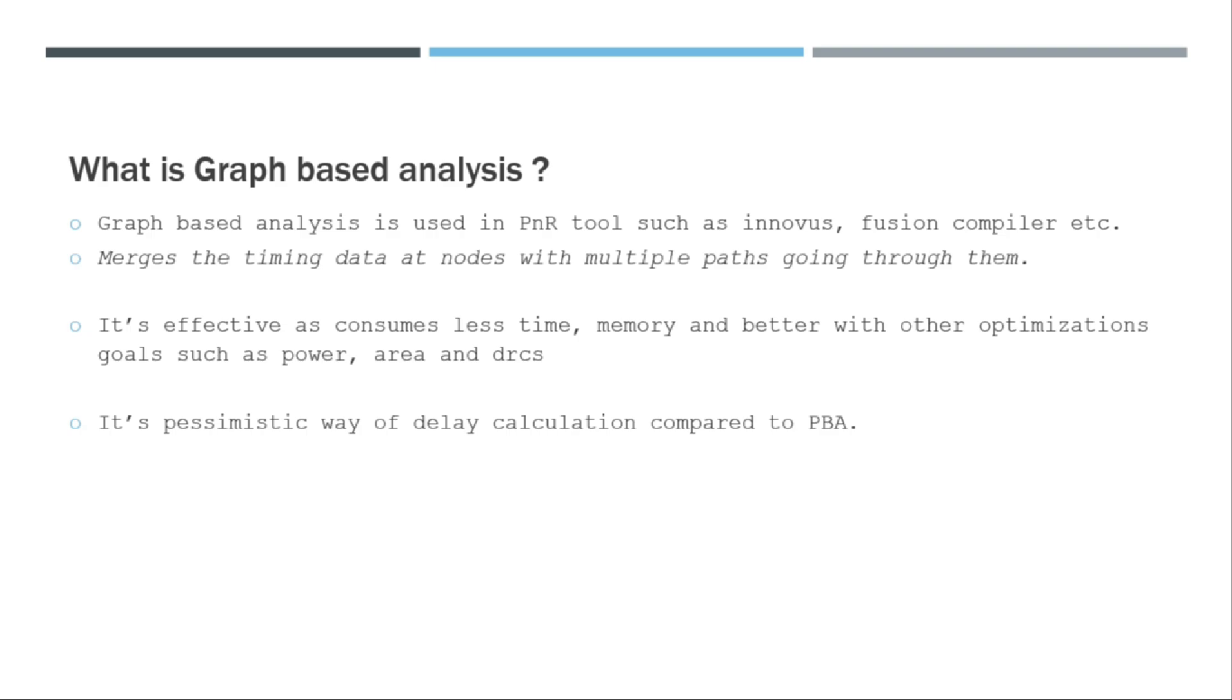It's very effective in case of PNR because the PNR has not only the timing as its goal but there are other optimizations that it has to do as well. For example, it has to do power optimization, area optimization, and it has to fix DRC simultaneously. It has to route the best way possible. In order to do so many optimizations, it already needs a huge amount of memory and high runtime.